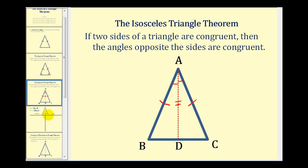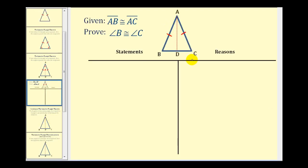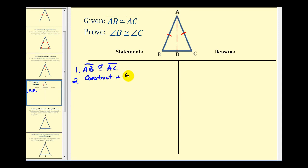So let's go ahead and set up the proof now. We'll start by stating the given: segment AB is congruent to side AC, so we do have an isosceles triangle. Step two, we'll bisect angle A by constructing an angle bisector. The reason for step one is given, and the reason for step two is that every angle has one angle bisector.